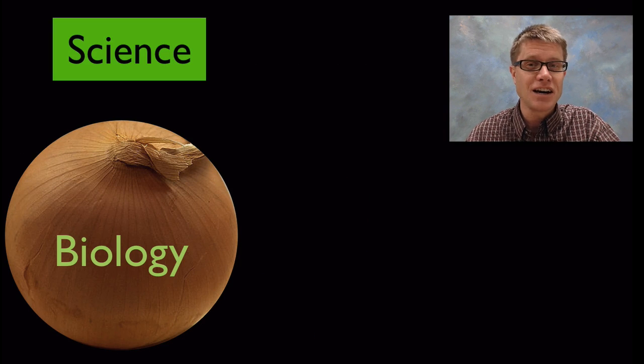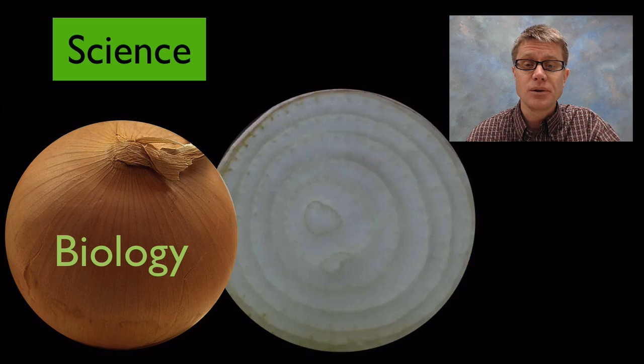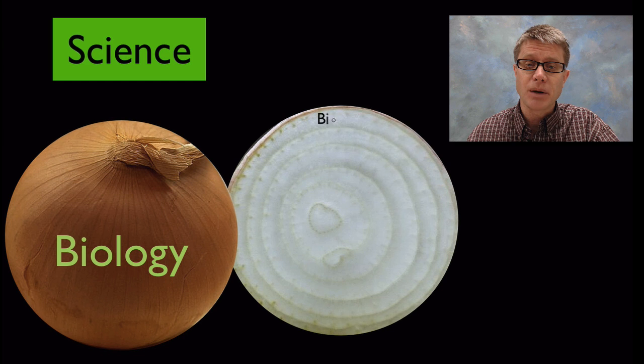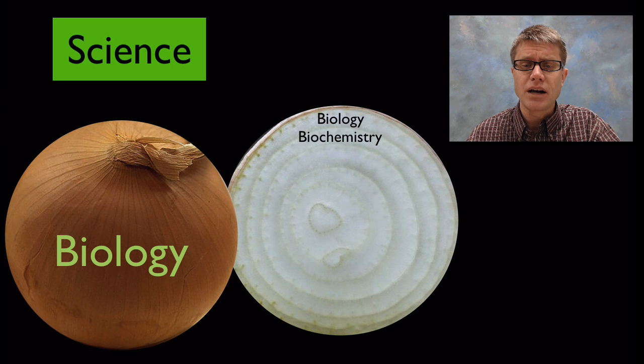Because science is like an onion. So if we were to look at biology as a science and you look at just the outer level of biology, you're just going to find biology—things like cells, things like ecosystems. But if you dig a little bit deeper you'll find that biology is built on biochemistry, these macromolecules.